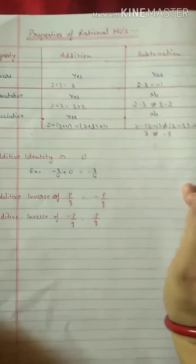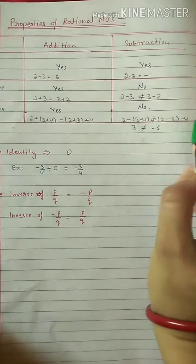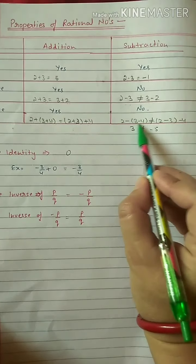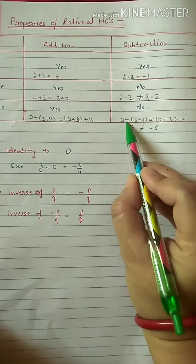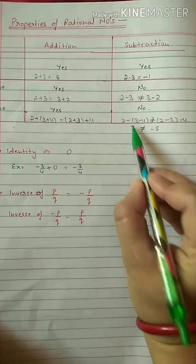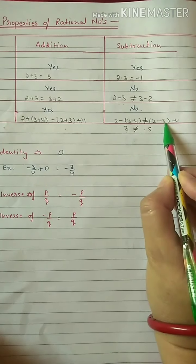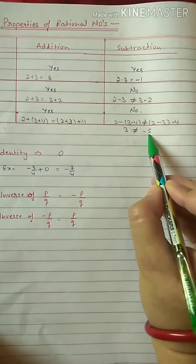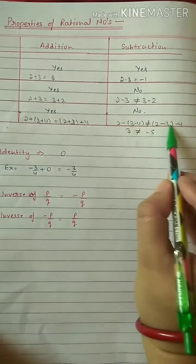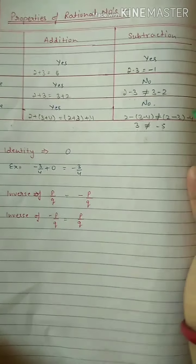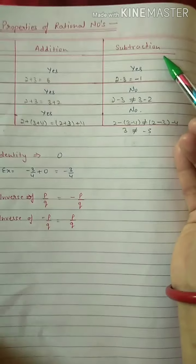Third property, associative, for subtraction: with three numbers, change the grouping and check. First grouping: 3 minus 4 is minus 1; then 2 minus (minus 1) becomes 2 plus 1 which is 3. Second grouping: 2 minus 3 is minus 1; then minus 1 minus 4 is minus 5. The answers differ, so associative property is also not applicable for subtraction.